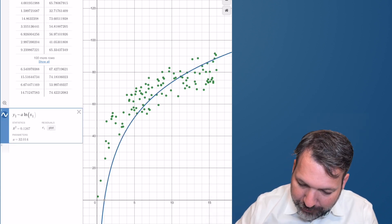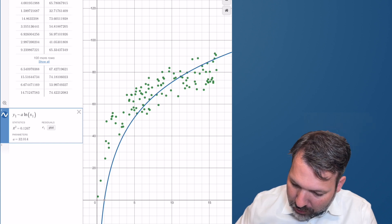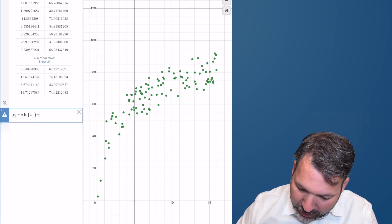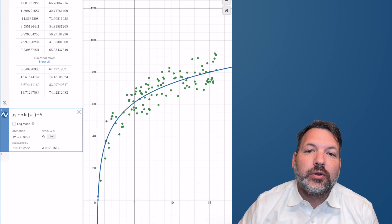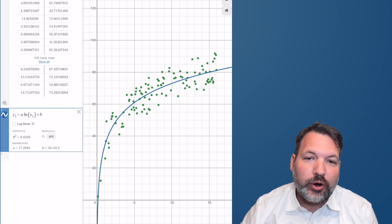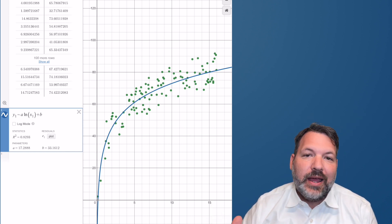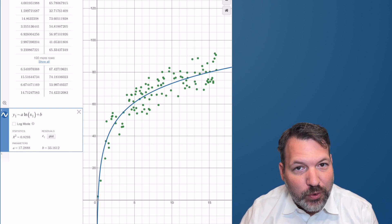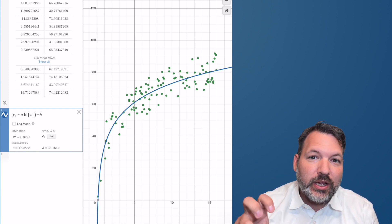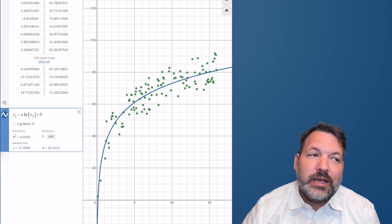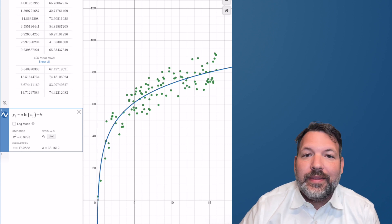In fact, we can also get Desmos to perform a logarithmic regression for us, and when we perform that regression, we can see, just like the original researchers found, a logarithmic curve with parameters of 17 and 33. That is, roughly, if you wanted to find your dog's age in human years, you would take the logarithm of the dog's age, multiply by 17, and then add 33.